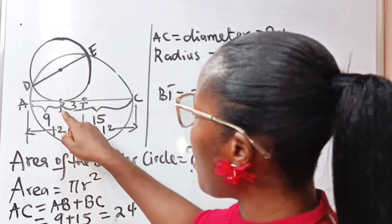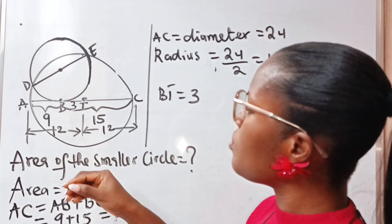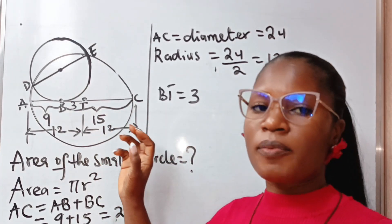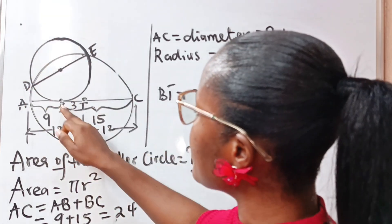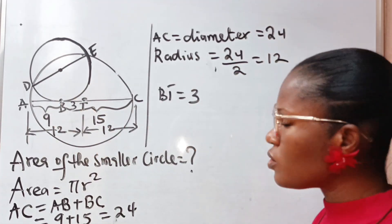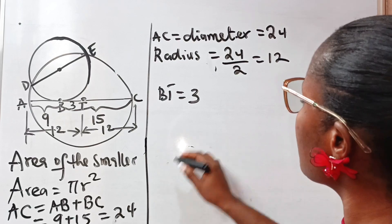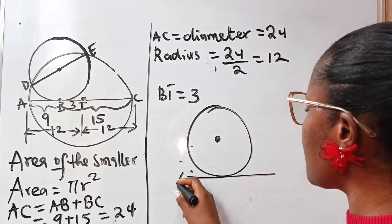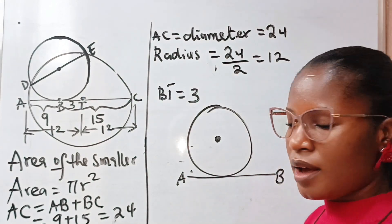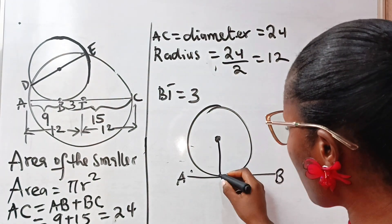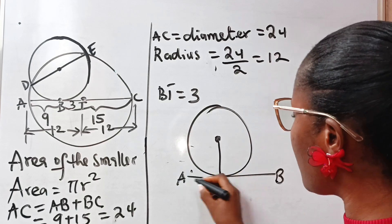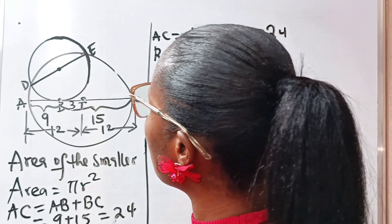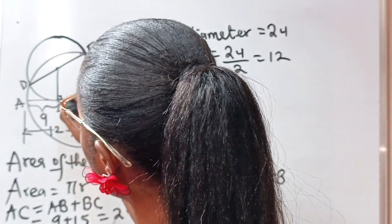Remember that point B is the point of intersection between the smaller circle and the line AC, because line AC — which happens to be the diameter of the bigger circle — is tangent to the smaller circle at this point. Now, let us recall the circle theorem: in a circle with center O and a tangent AB, if you drop a straight line from the center to the point of contact between the circle and the tangent, 90 degrees is formed. So if I drop a straight line from the center of this circle to B, that forms 90 degrees.